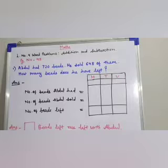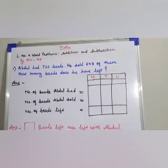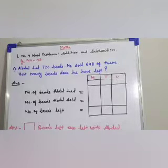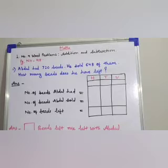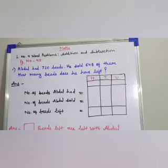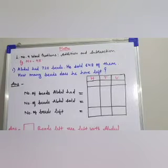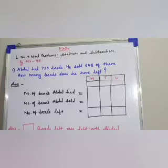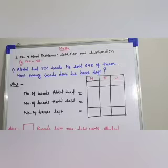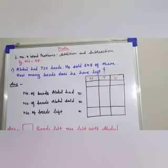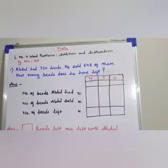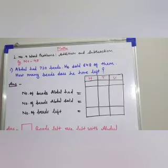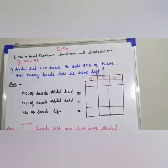Children, in lesson number 9 Word Problems Part 1, we learned Addition Word Problems. Today, in Part 2, let us learn Subtraction Word Problems. I have explained to you in Part 1 that word problems give us some information and ask us to find something. When questions of mathematics are presented in the form of a story, we call them word problems. Inside the story, there are numbers which we need to use to solve the problem. In short, we have to understand clearly what information is given and what we have to find out, and then find the answer.